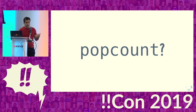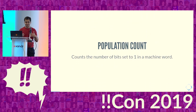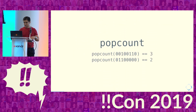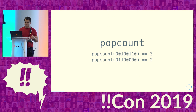So what's pop count? Pop count, or population count, is an instruction that counts the number of bits set to one in a machine word — usually 32 or 64 bits. For illustrative purposes using 8-bit words: the pop count of the first word is three, because three bits are set to one, and the pop count of the second word is two, because two bits are set to one.